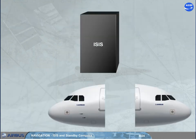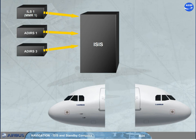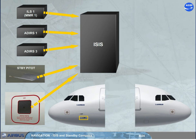The ISIS receives information from ILS-1 or MMR-1, ADERS-1 or ADERS-3, the standby pitot located as shown, and the standby static ports located as shown on the left and on the right.